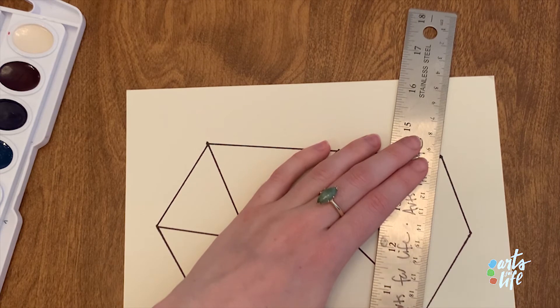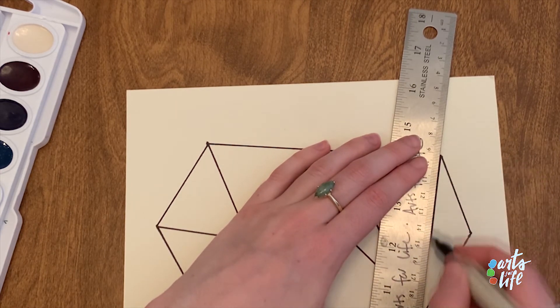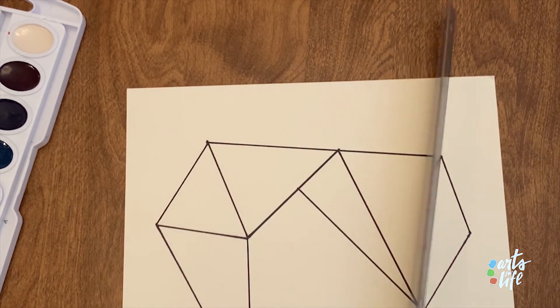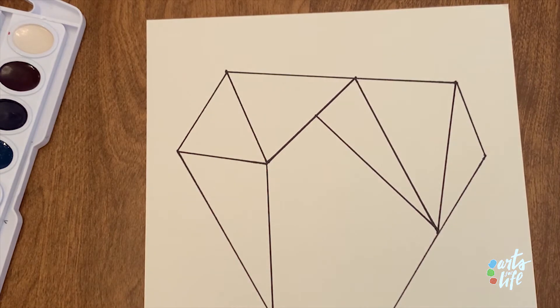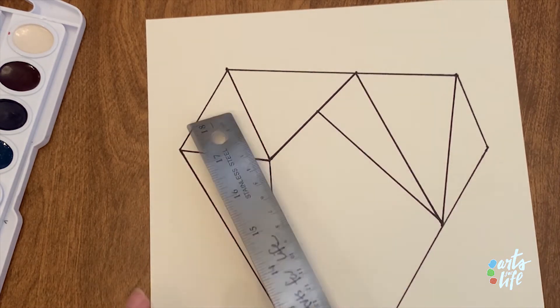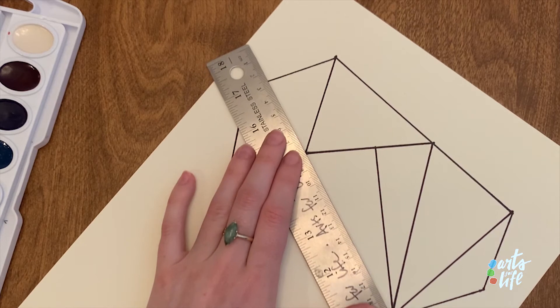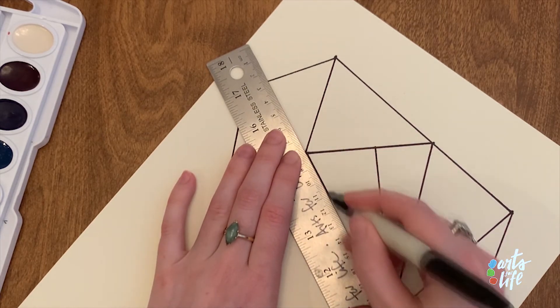And again, I'm using this black permanent marker right now, just so you can see the lines that I'm drawing, but you could most certainly start with a pencil. That way it's easier if you make any mistakes or lines that you need to erase.